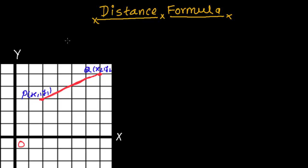Hi friends! Today we are going to learn about the distance formula in coordinate geometry. We are going to find out the distance between two points. Here is point P and here is point Q. P has coordinates X1, Y1 while Q has coordinates X2, Y2. We have to find out this distance from P to Q — this red line, the length of this red line. Today we are going to discuss about this.